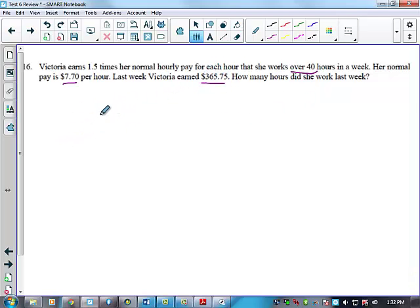16. This is a good question. Victoria earns 1.5 times her normal hourly pay for each hour she works over 40 hours in a week. Her normal pay is $7.70 per hour. Last week she earned $365.75. How many hours did she work last week? So first of all, you know that she earns $7.70 for the first 40 hours, right?